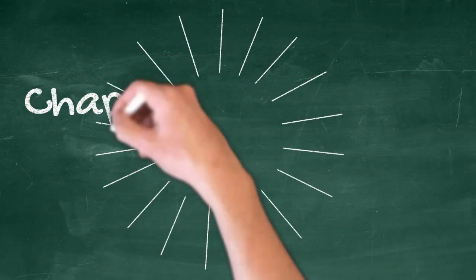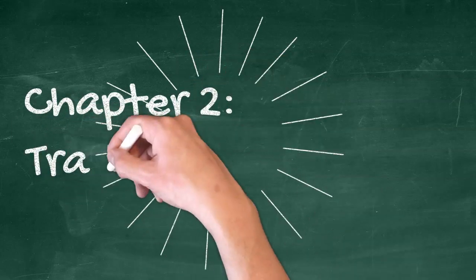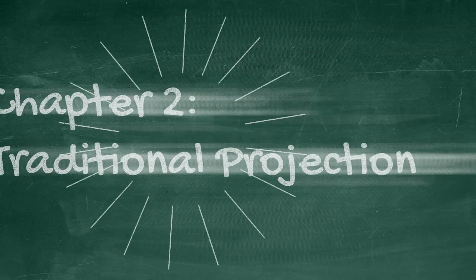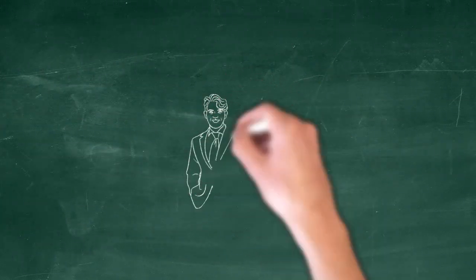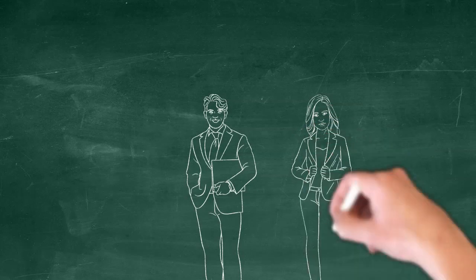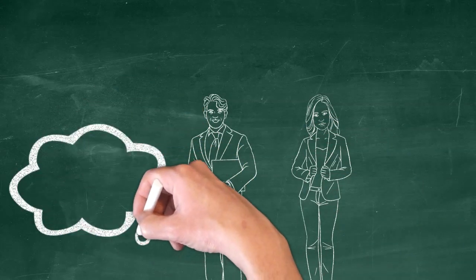Chapter 2. Traditional Projection. In traditional psychology, projection is when a person displaces their own feelings onto another. Let's see how it works.